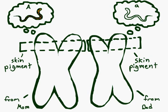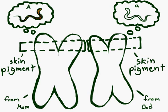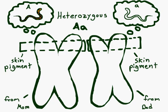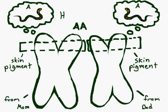So if the alleles for the same gene are different in one animal — like if the mother gives one form and the father gives a different one — the animal is heterozygous, or a hybrid. If the alleles are the same, then it's homozygous.